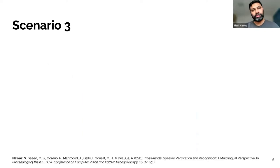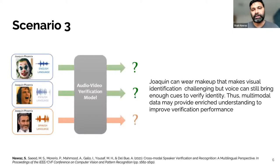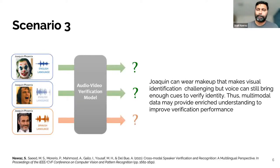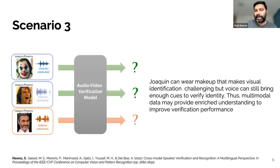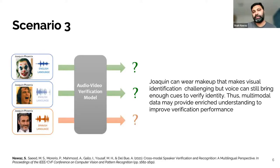The third application scenario involves different modalities. A celebrity can wear makeup that makes visual identification challenging. However, if we have accompanying speech or voice information, we can accurately identify this famous actor into the correct category using audio-visual information. All three application scenarios are seen in real world settings, so it is very important to build a system that can process multiple data from multiple modalities.